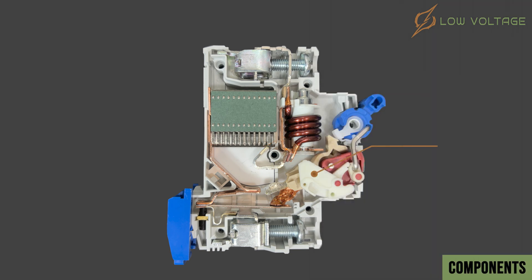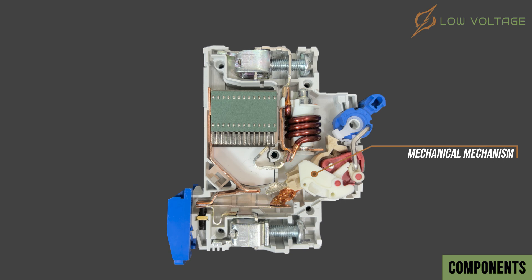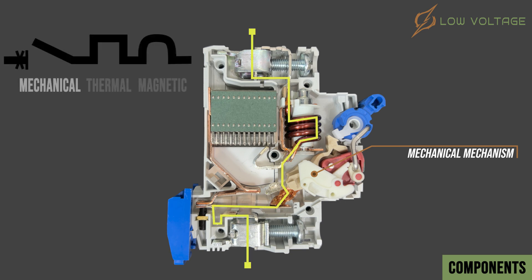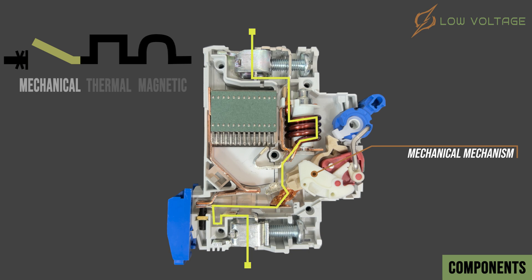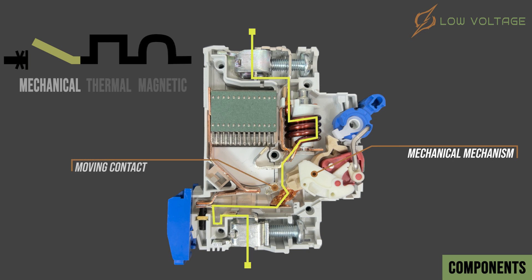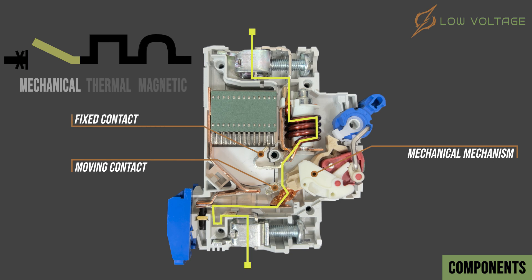Thermal and magnetic units are connected with each other in series to complete the protection circuit through a mechanical mechanism, described with this symbol in electrical drawings. This is achieved by a moving contact in connection with the thermal unit and a fixed contact in connection with the magnetic unit.